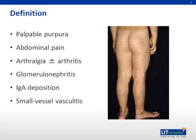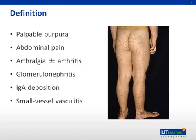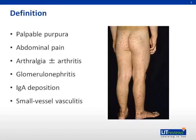The most recent classification criteria are those of the European League Against Rheumatism and Pediatric Rheumatology European Society, published in 2006. The criteria for HSP include a mandatory finding of palpable purpura or petechiae with lower limb predominance and without thrombocytopenia, in addition to one or more of the following: diffuse abdominal pain, arthritis or arthralgia, renal involvement, and/or a biopsy specimen demonstrating predominant IgA deposition.